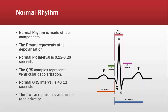The T wave represents ventricular repolarization — the ventricles relaxing. So: the atrium contracts, sends the impulse down to the AV node, which sends it to the bundle of His and out to the Purkinje fibers, the ventricles contract, and then the ventricles relax — which is the T wave. That's the conduction system of the heart, and that's what it reflects on the rhythm.